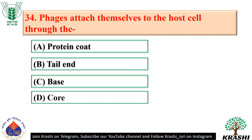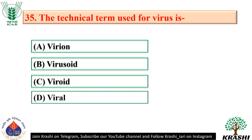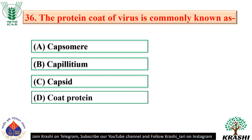Question number 34: Phages attach themselves to the host cell through the tail end — option B. The tail stabs and pierces the bacterium membrane to allow the virus genetic material to pass through. Question number 35: The technical term used for virus is virion — option A. Question number 36: The protein coat of virus is commonly known as capsid, which encloses the genetic material.